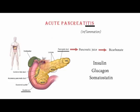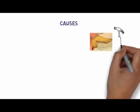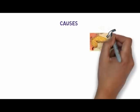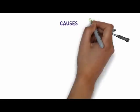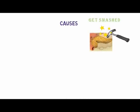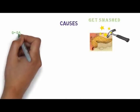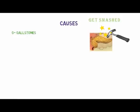The pancreatic duct also has digestive enzymes that assist digestion and absorption of nutrients in the small intestine. Now we need to know the causes of acute pancreatitis. If you smash the pancreas or any other organ very hard, obviously it will get inflamed. So remember the inflammation of pancreas by a mnemonic: GET SMASHED, where G stands for gallstones.